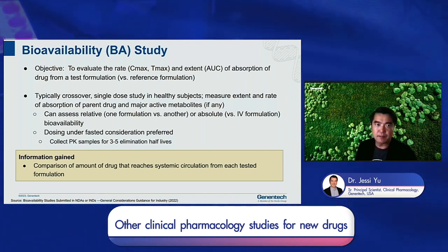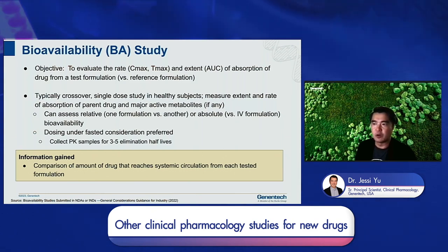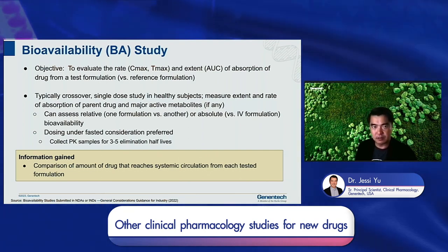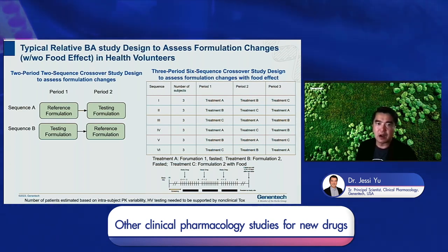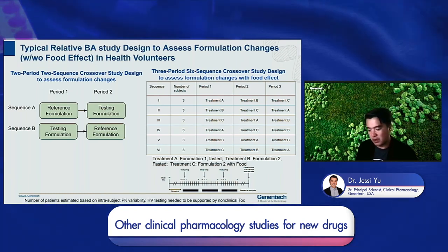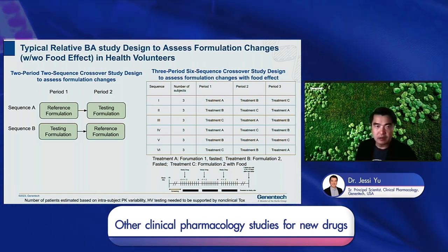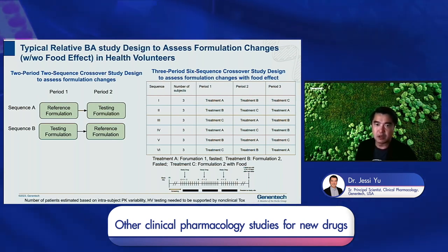Both food effect and relative bioavailability studies are typically conducted with a single-dose crossover design — if the drug candidate has linear and time-independent PK. For the relative bioavailability study, we evaluate the exposure of the test formulation versus the reference and make a judgment call on whether we need a dose adjustment for the test formulation. Here I'm showing different design options: on the left is a standard two-treatment, two-period crossover design. Sometimes we combine the food effect study with the relative bioavailability study to understand both relative bioavailability and food effect simultaneously, which would use a three-treatment, three-period crossover design, as shown on the right.